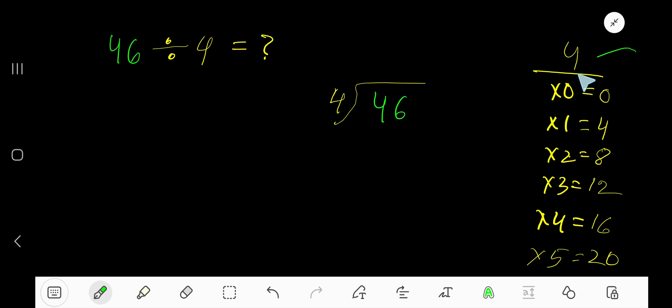To find out the multiplication table of 4, just add 4 with the previous step. 0 plus 4 is 4. 4 plus 4 is 8. 8 plus 4 is 12. 12 plus 4 is 16. 16 plus 4 is 20.